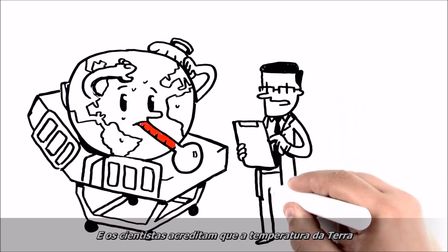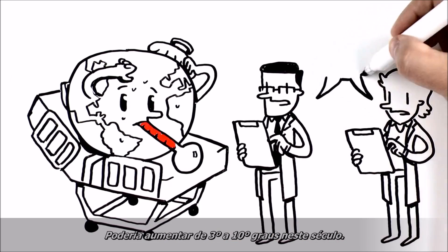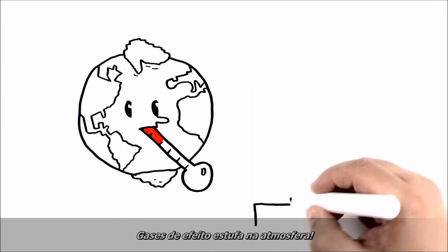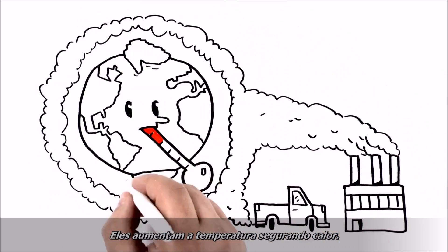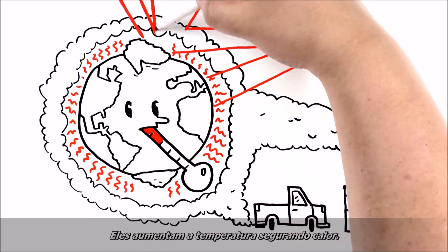And scientists believe Earth's temperature could rise by 3 to 10 degrees this century. Why? For one thing, greenhouse gases in the atmosphere raise the temperature by trapping heat.